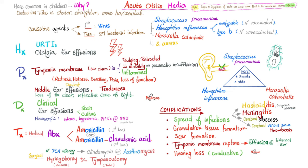It's usually viral in origin, but before long there's a secondary bacterial infection, and by the time the patient presents to the doctor it's usually bacterial — Streptococcus pneumoniae, Haemophilus influenzae, or Moraxella catarrhalis. Since the vaccine for Haemophilus influenzae covers type B, if unvaccinated it's probably type B; if vaccinated, it's probably non-typeable Haemophilus influenzae, statistically speaking.